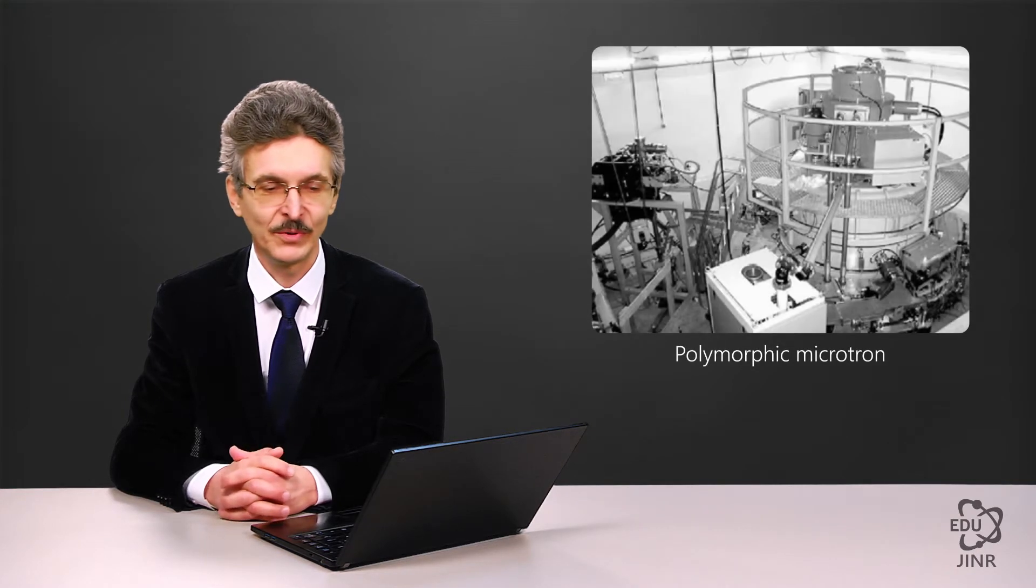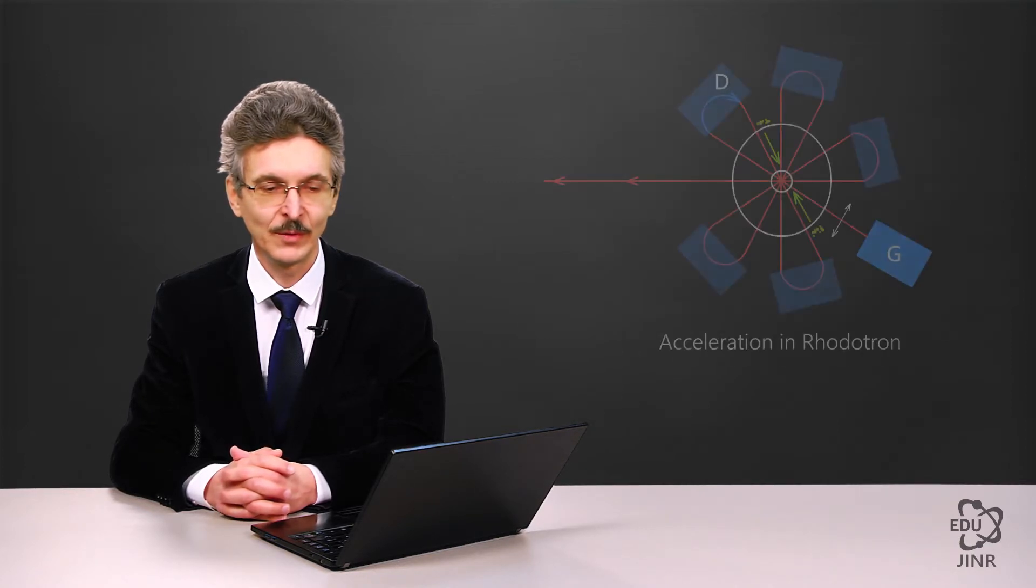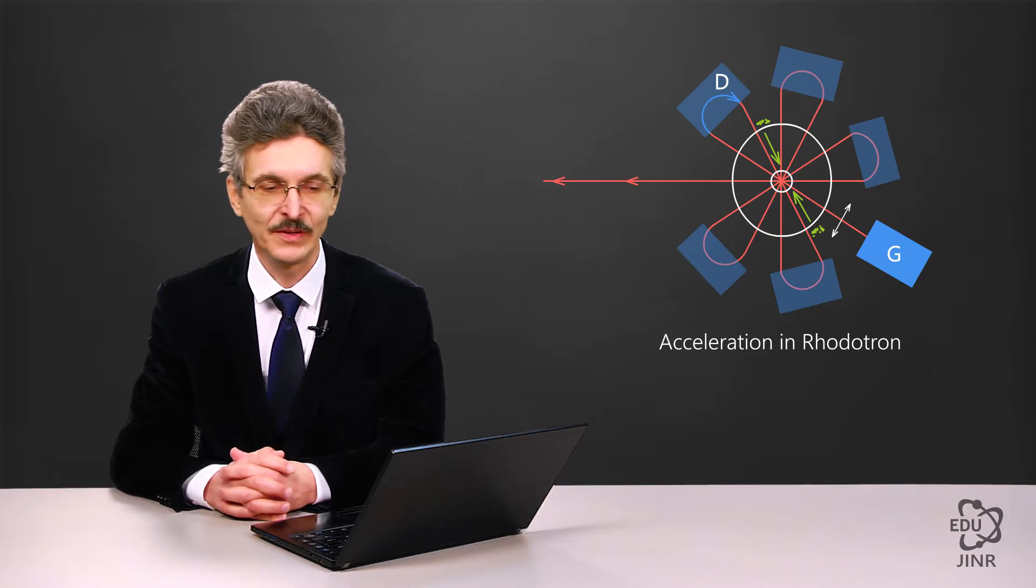The so-called polymorphic microtrons are geometrically very diverse. This picture shows an example of such a microtron, which is serially produced. It is called a rodotron. This accelerator has an RF resonator at the center, where there is no magnetic field.